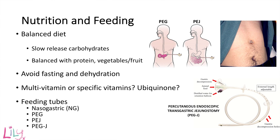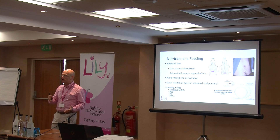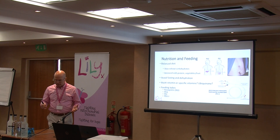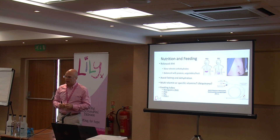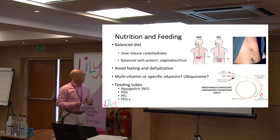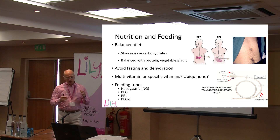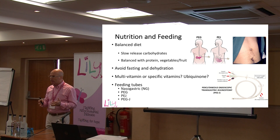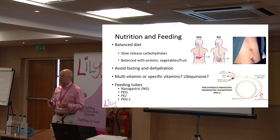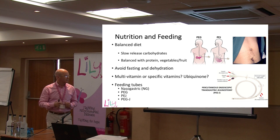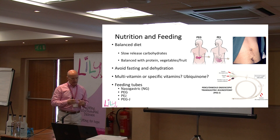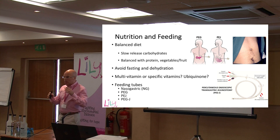Nutrition and feeding. I've mentioned the low-residue diet. As far as possible, the diet needs to be balanced in terms of carbohydrates, fats, and proteins. Some people are on very specialised diets like the ketogenic diet — a high proportion of fat to carbohydrate — which is often used in patients who have epilepsy as part of their clinical problem. But for everyone else, it really should be a balanced diet. It can be helpful to have starchier carbohydrates as an evening meal to release sugar slowly overnight.